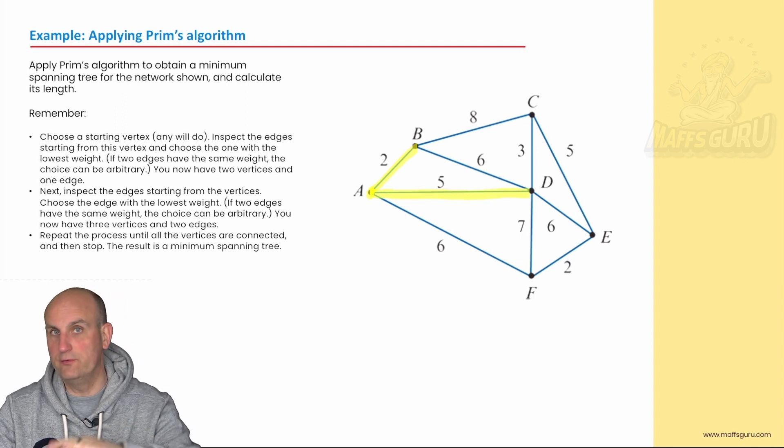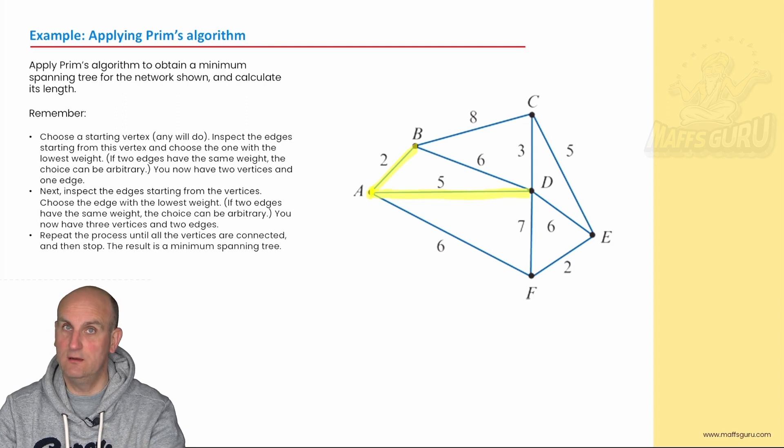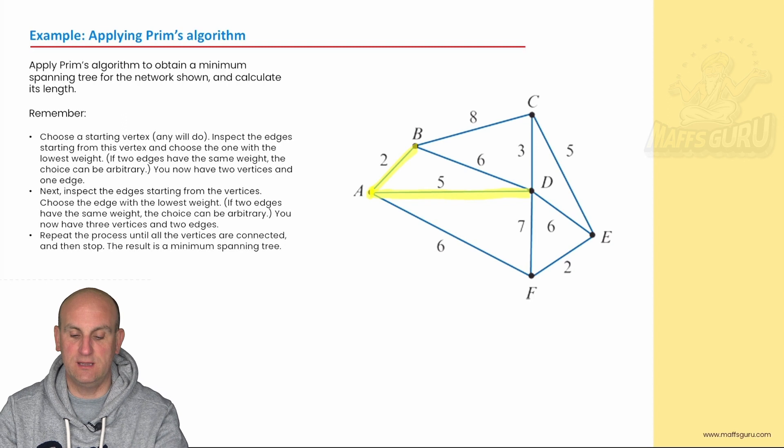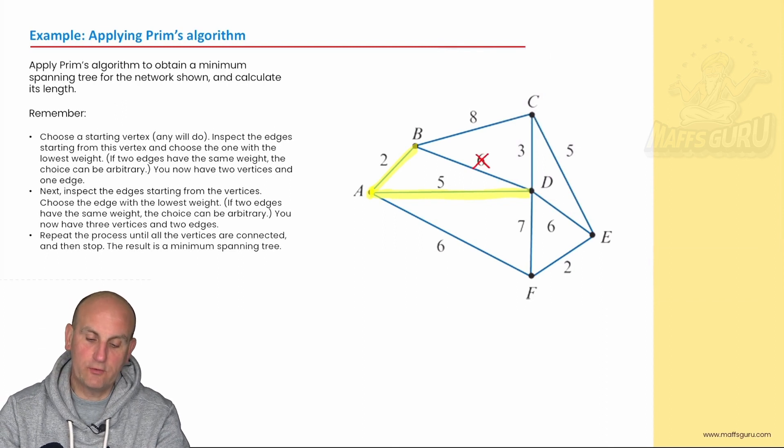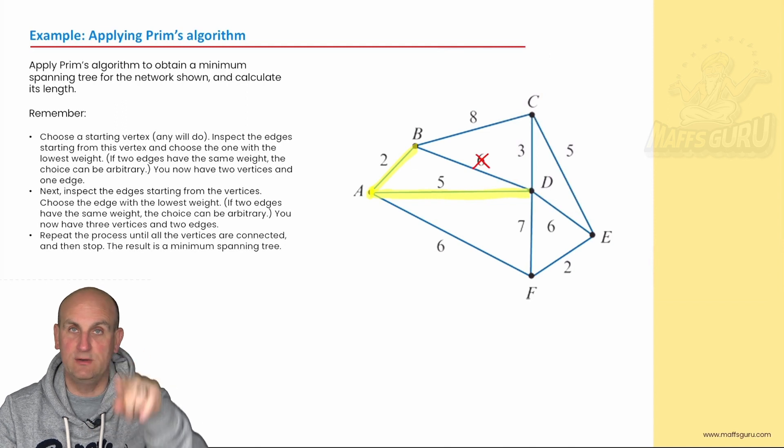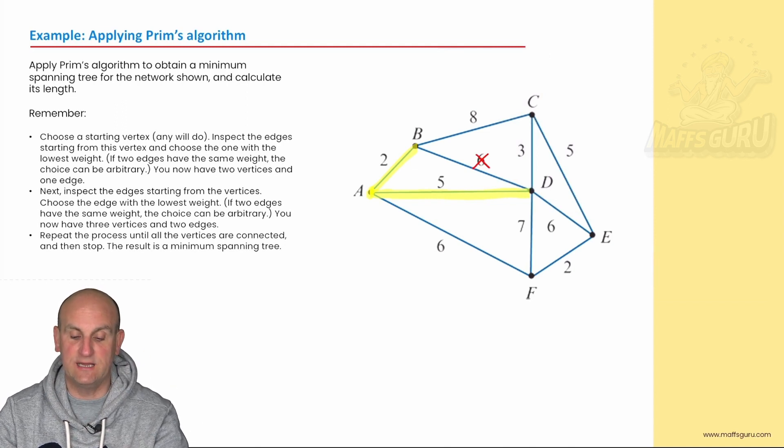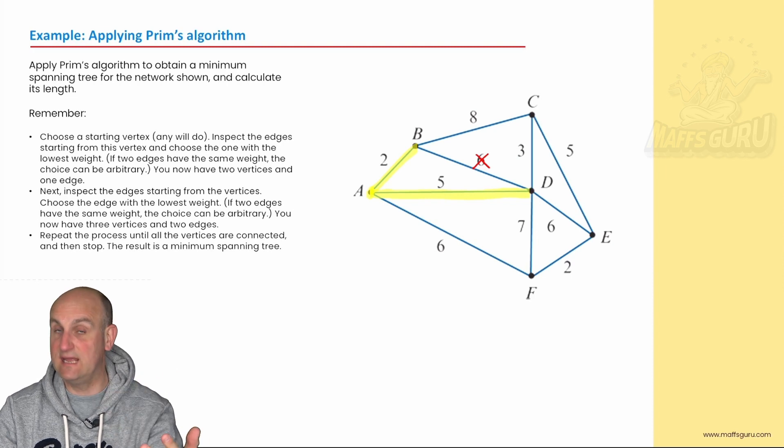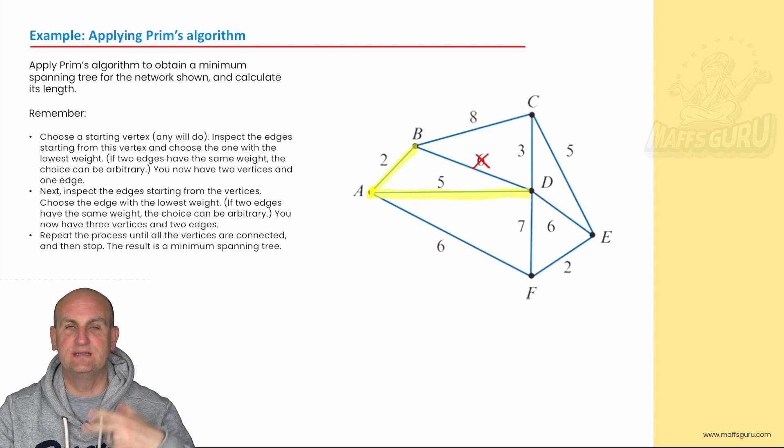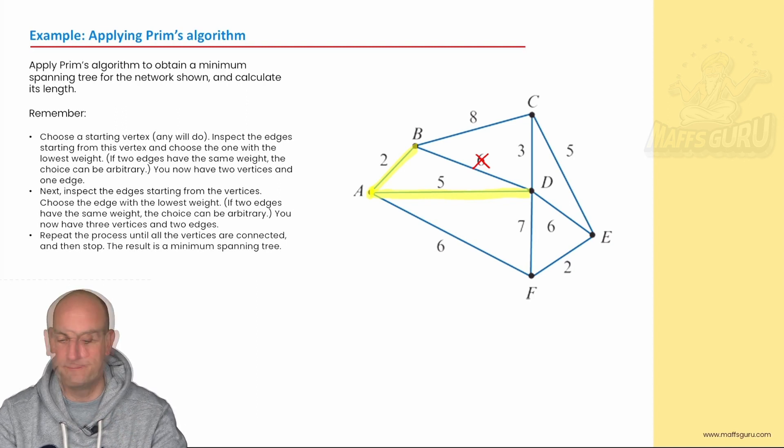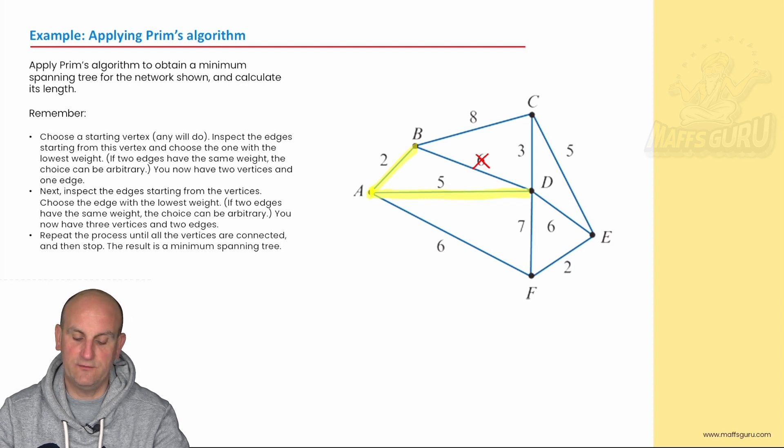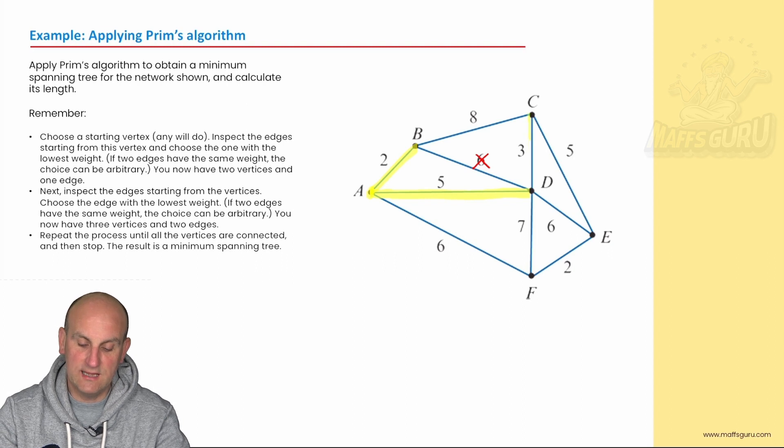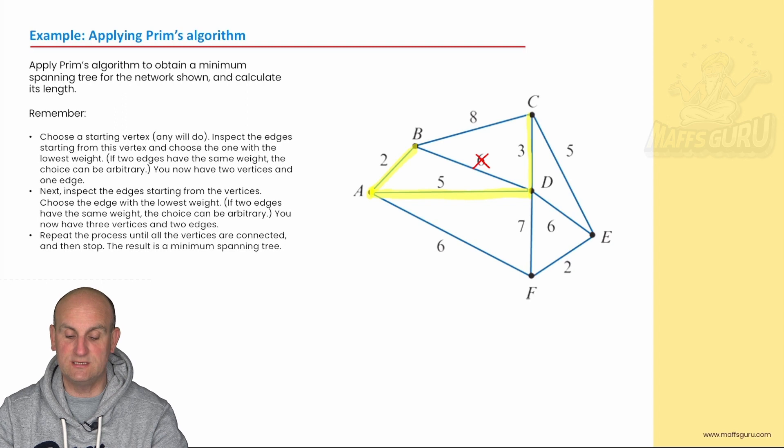Now, because minimum spanning tree and the tree cannot have a loop or a circuit, I now know that I cannot connect B and D together. So, what I'm now going to do is I put a cross through there to say, I'm not going to be able to use that one now, because otherwise it's going to create a circuit and I can't do that. But I go back and say, right, I've now got A, B and D connected to my network. Out of all of those three points, where is the next smallest line coming off of it? So, we've got an eight coming off of B, we've got a three coming off of D, a six coming off of D, a seven coming off of D, and a six coming off of A. Well, hopefully, you'll realize, therefore, that there will be my next choice, because three is the smallest of all of those numbers.